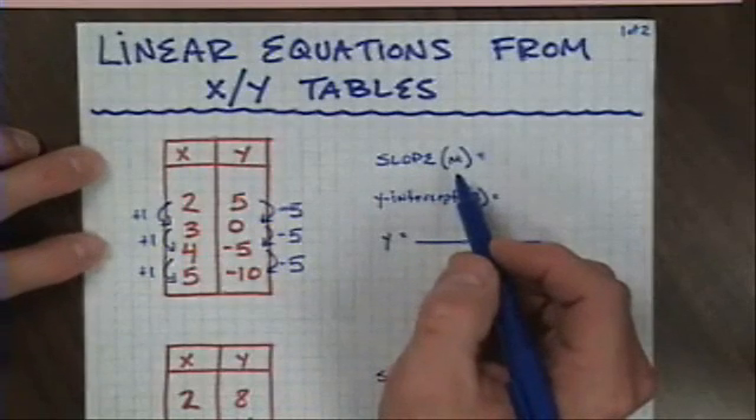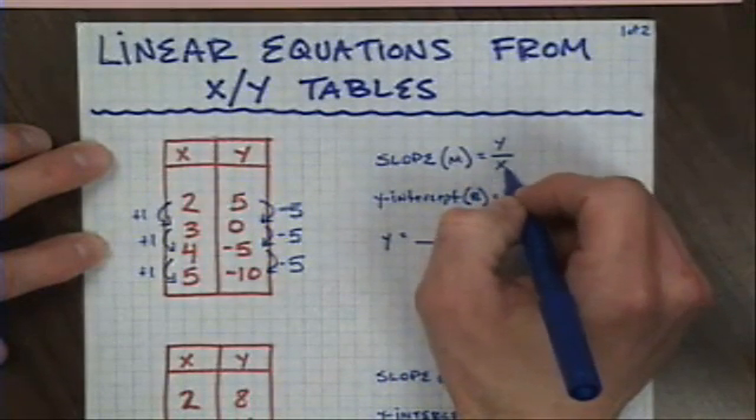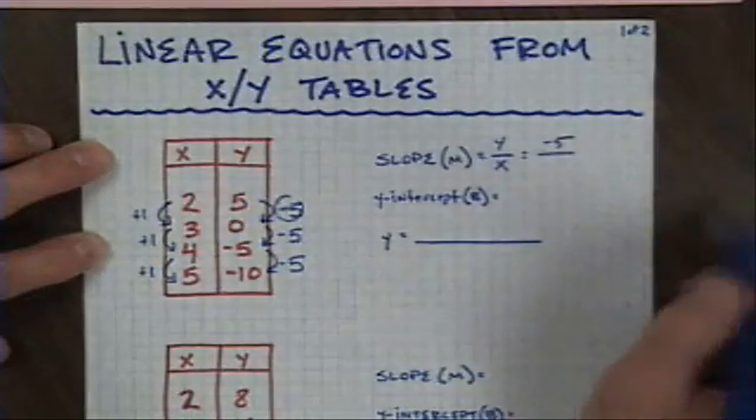Now to calculate slope, we've talked about that. The change in y goes on top and the change in x goes on the bottom. So my change in y is a minus 5. I'm going to put that on top, which becomes negative 5.